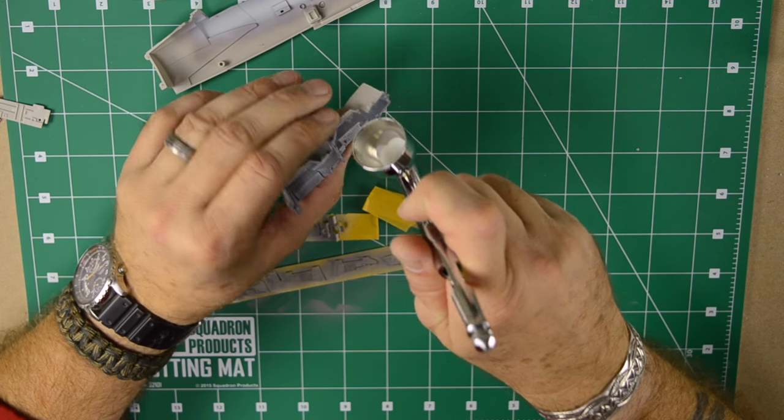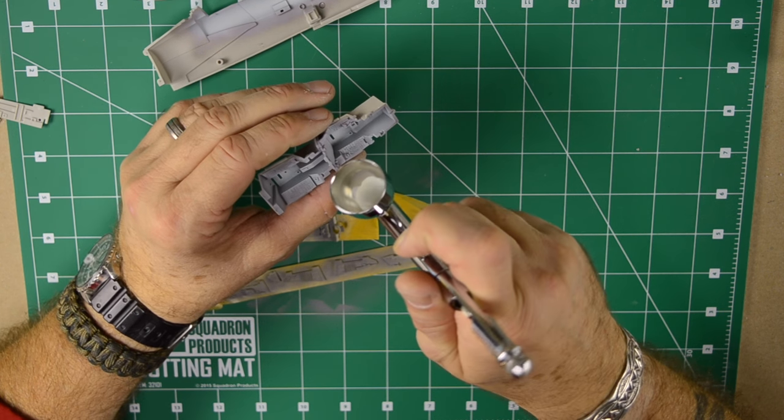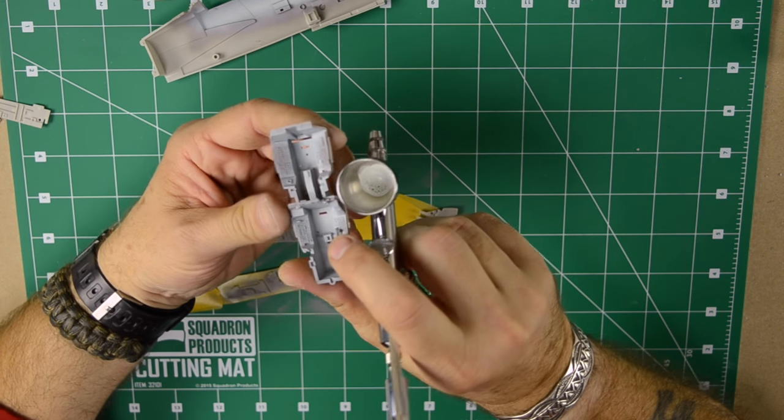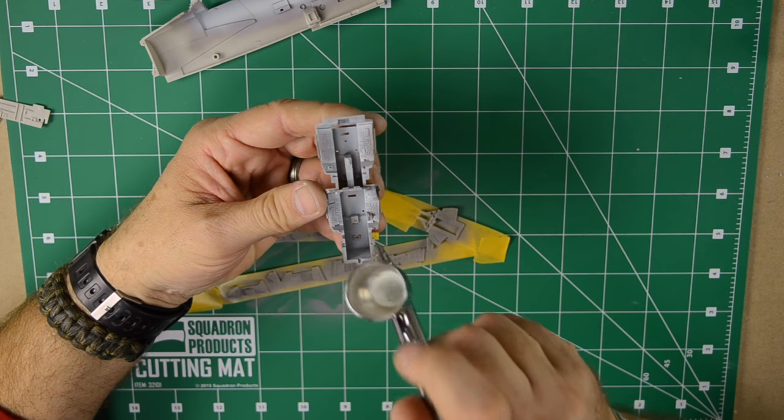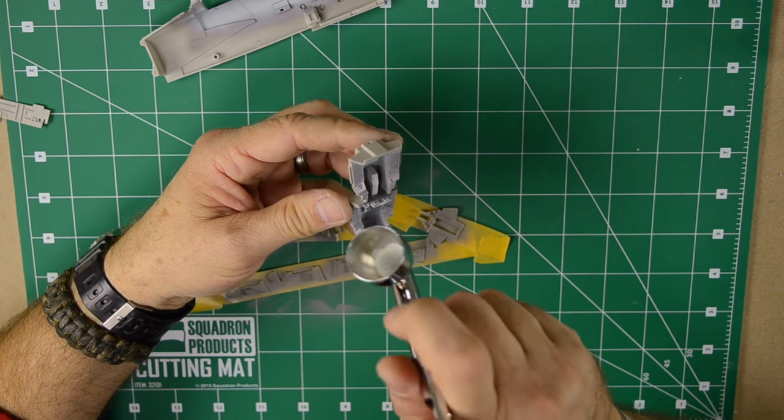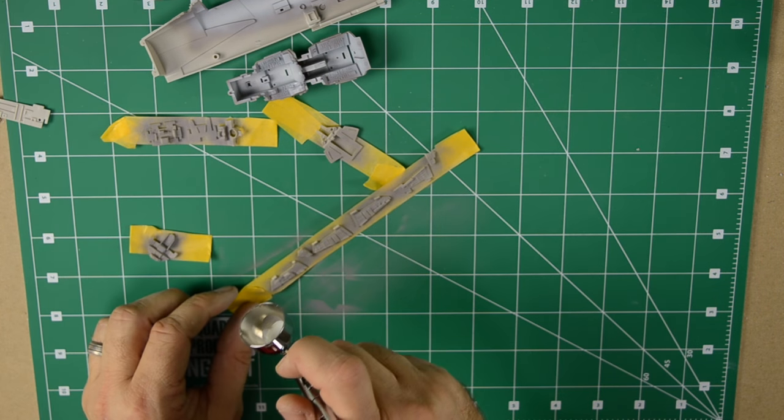Then it only becomes easier once you get into the crevices with oil paint or whatever media you're using to create some use and that the cockpit is used and some wear and tear. But this already will help a lot if you already pre-create some of the shading. Again in the cockpit itself it's a pretty tight place. So once you put the seats in there there's not much you can see anymore.